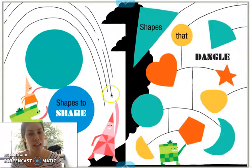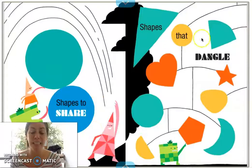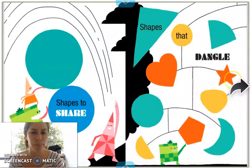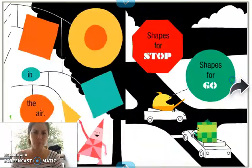Shapes to throw. Shapes to share. Shapes that dangle. Dangle means that they're hanging from somewhere and they're moving as they're hanging.